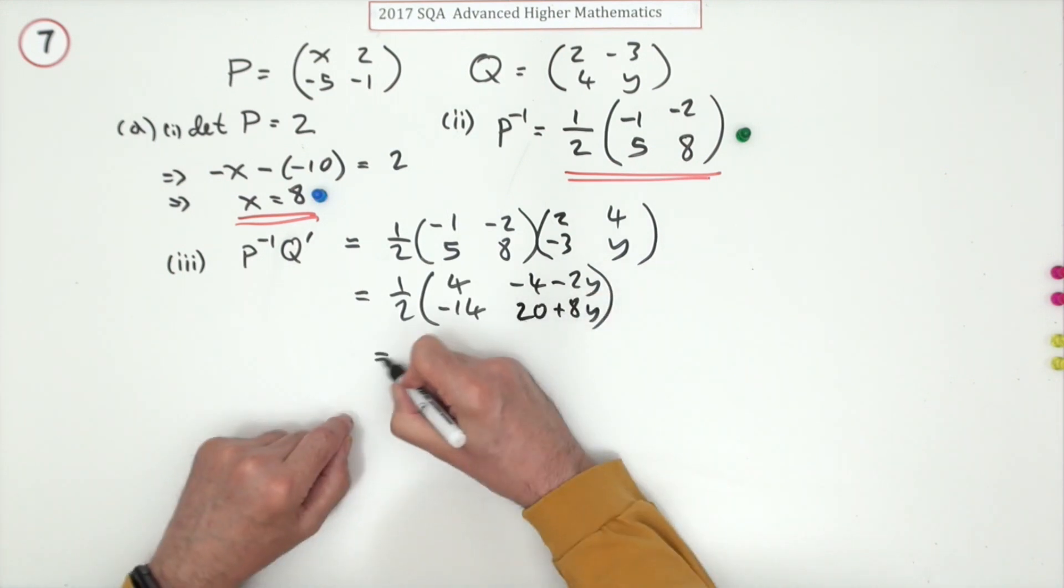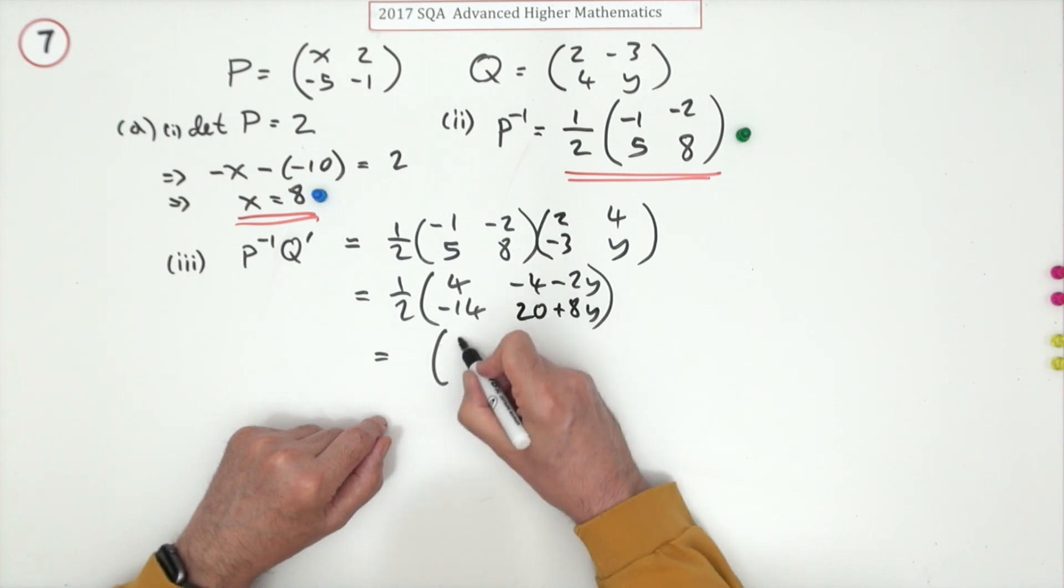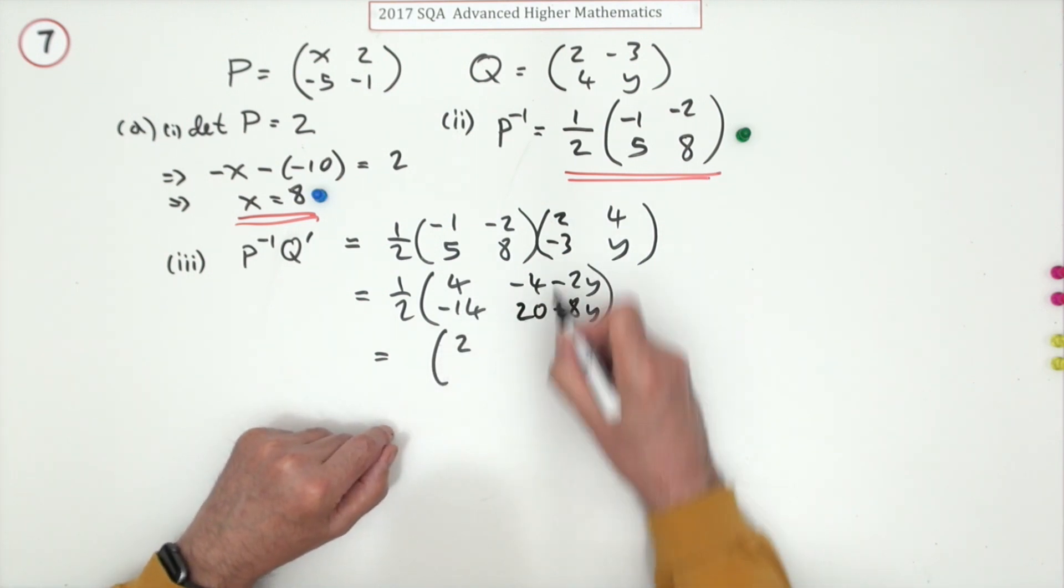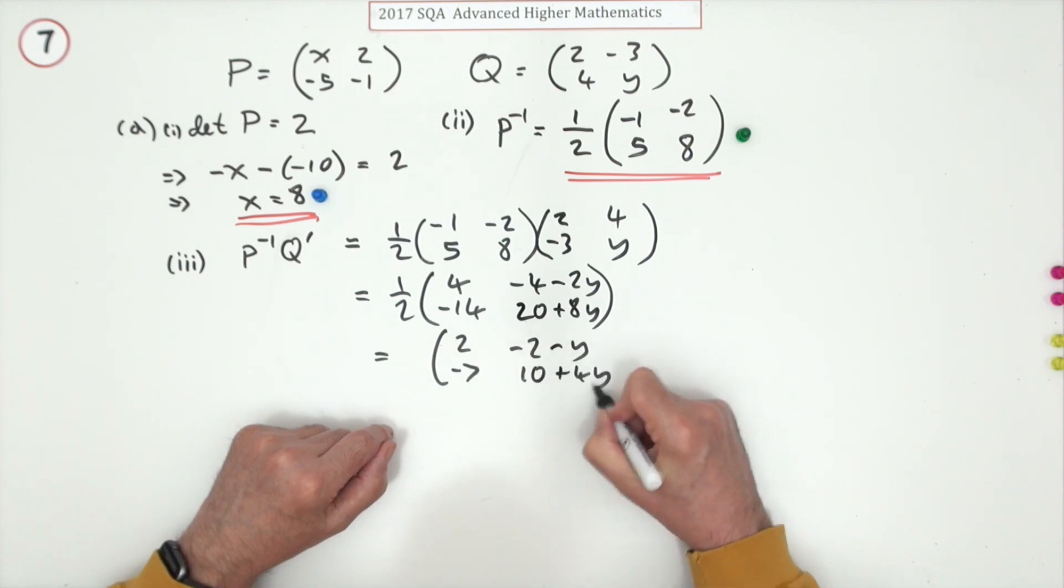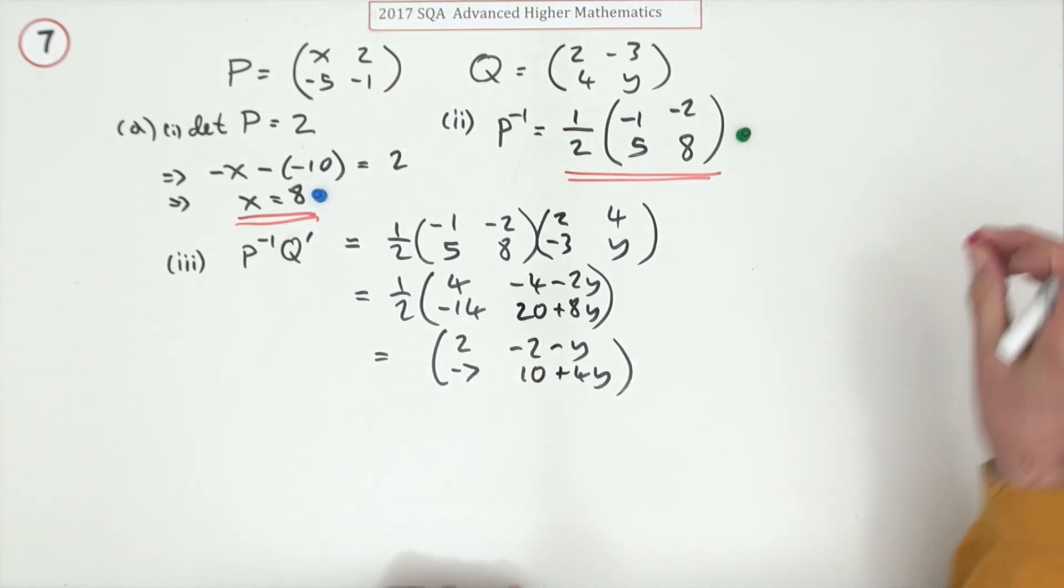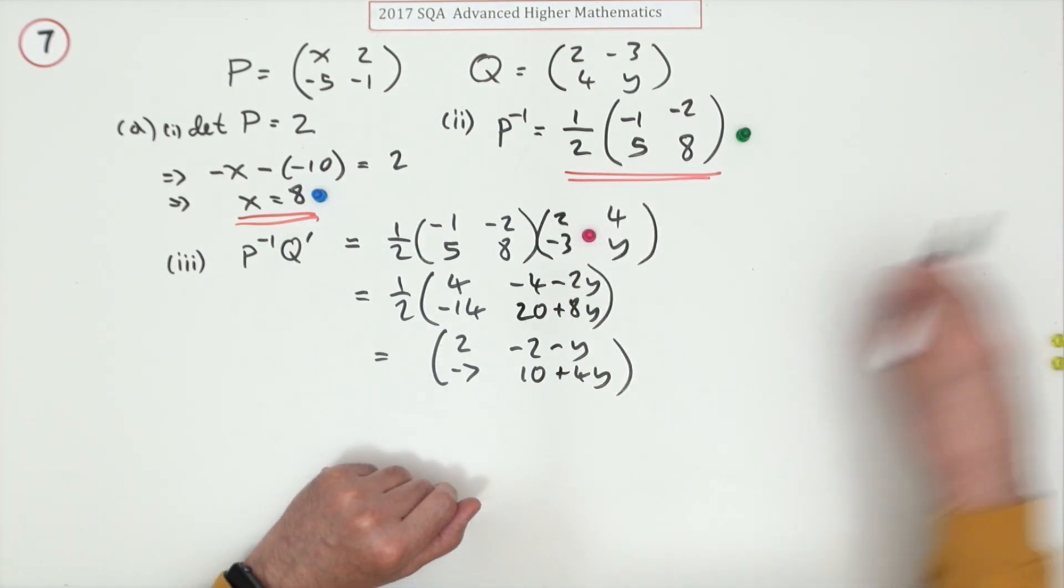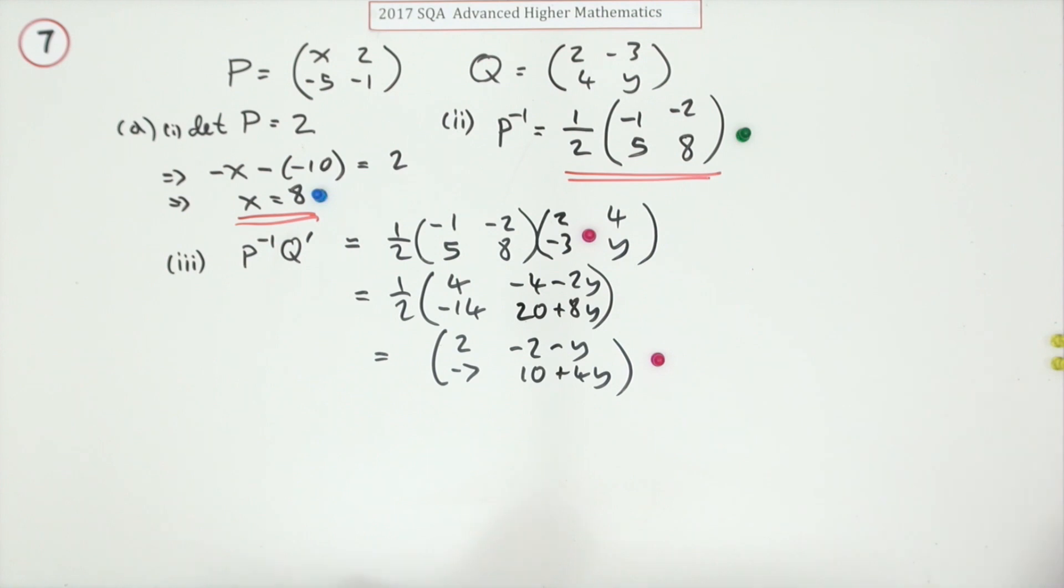Now finally divide by two because everything has quite nicely: two, negative two minus y, negative seven, ten plus 4y. The first mark was for getting the transpose of Q, and there was just one mark for carrying out that matrix multiplication.